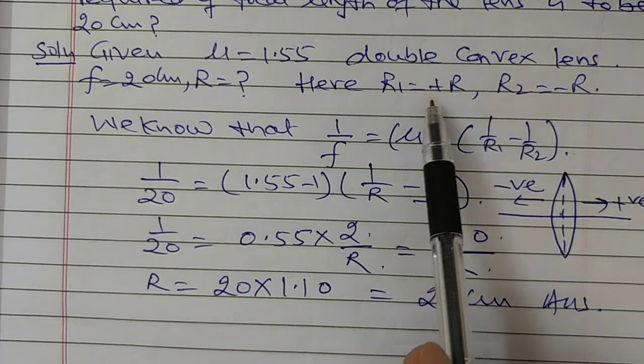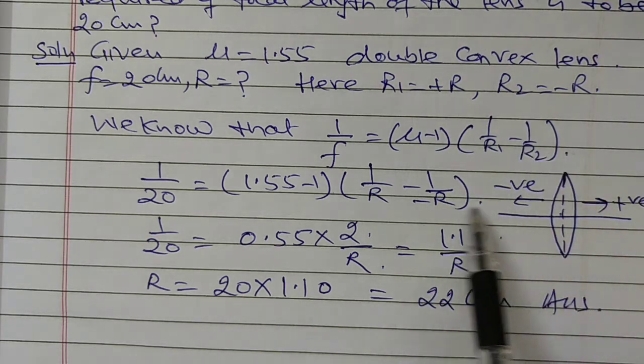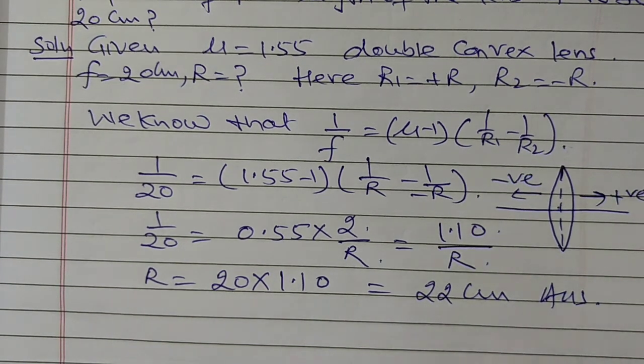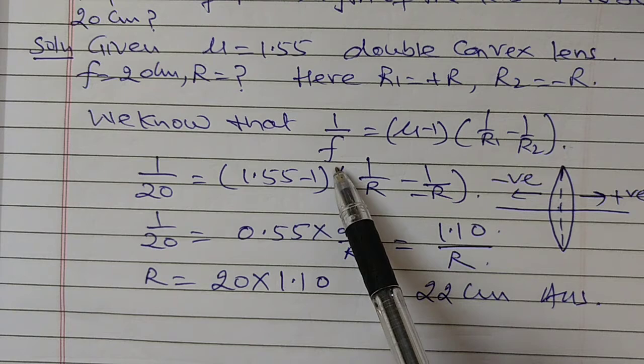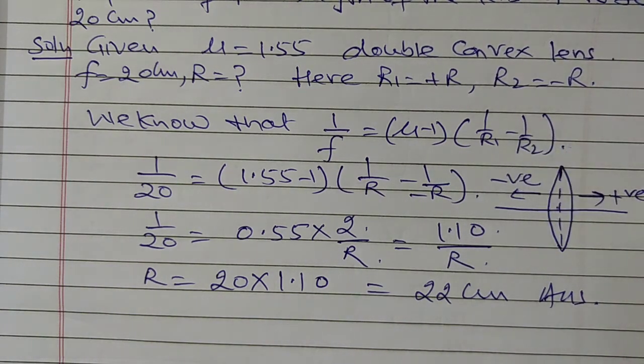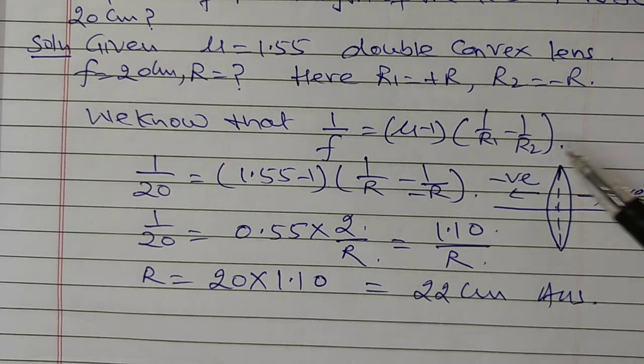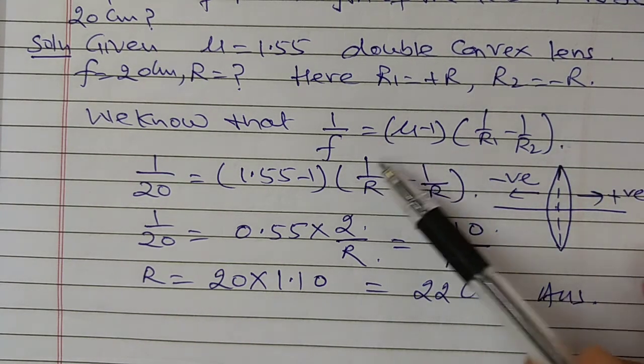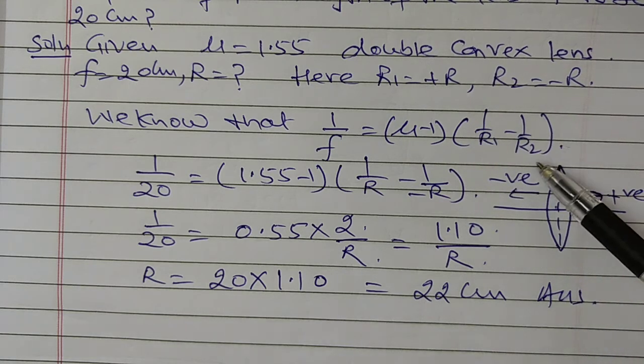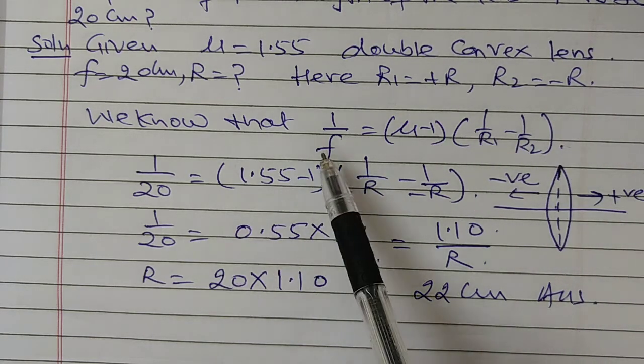Here, R1 is equal to plus R and R2 is equal to minus R. We know that from lens makers formula, 1 upon f is equal to mu minus 1 into 1 upon R1 minus 1 upon R2.